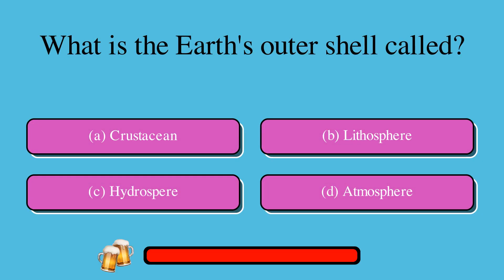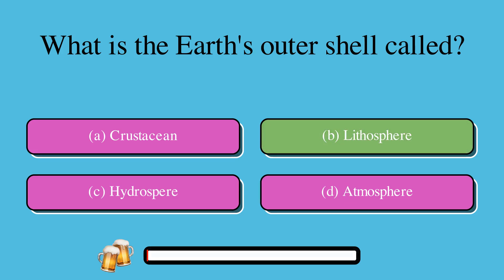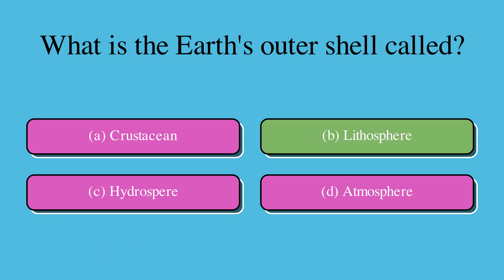What is the Earth's outer shell called? A. Crustacean, or B. Lithosphere, or C. Hydrosphere, or D. Atmosphere? The correct answer is B. Lithosphere.